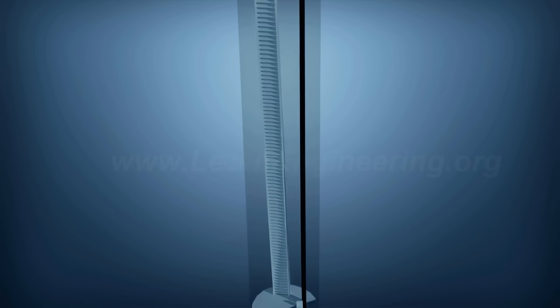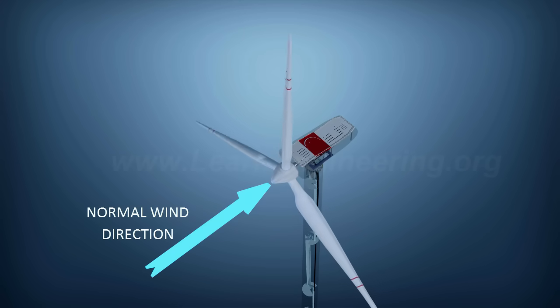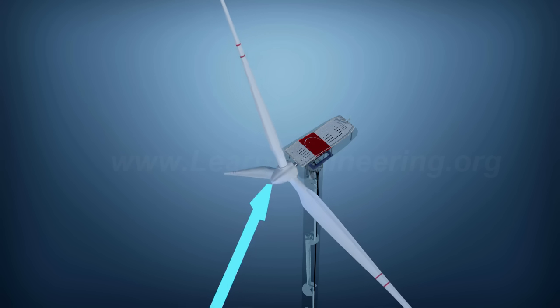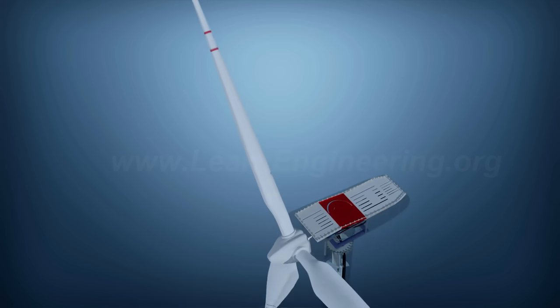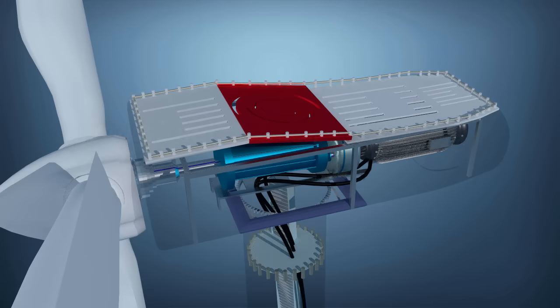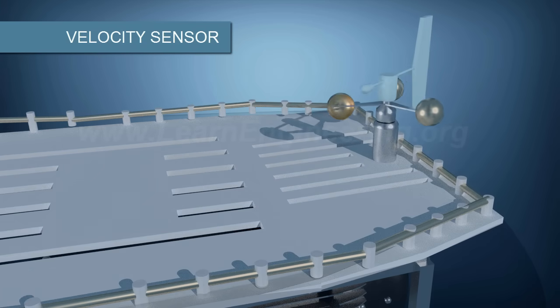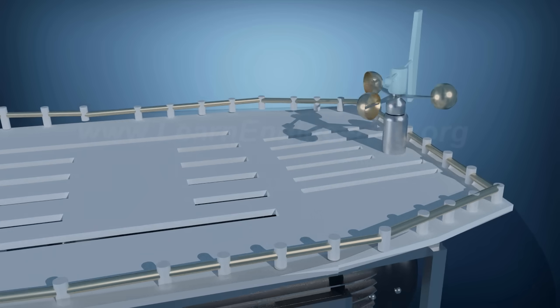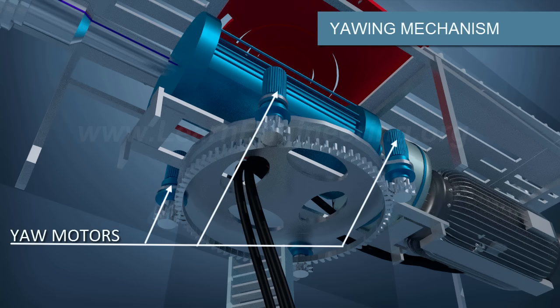The wind turbine should face the wind normally for maximum power extraction. But the wind direction can change at any time. A velocity sensor fitted on the top of the nacelle measures the wind speed and direction. The deviation in the wind's direction is sent to an electronic controller, which in turn sends an appropriate signal to the yawing mechanism to correct the error.